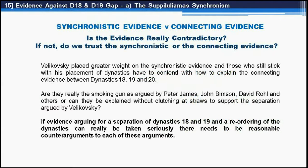Is there really a contradiction in the evidence? Which should we trust — the synchronistic evidence Velikovsky put forth, or the connecting evidence from John Bimson, David Rohl, and Peter James? Velikovsky placed greater weight on synchronistic evidence, while those sticking with his placement must explain the connecting evidence. Are they really the smoking gun as argued by Peter James, John Bimson, and David Rohl? Can they be explained without clutching at straws to support the separation of dynasties? There needs to be reasonable counter-arguments to each claim.